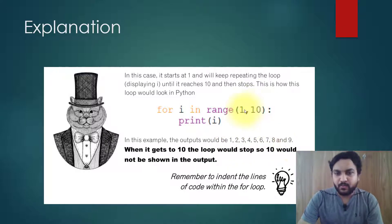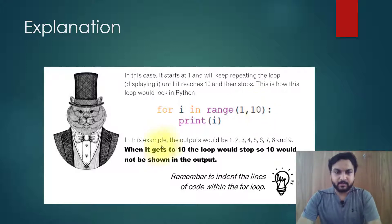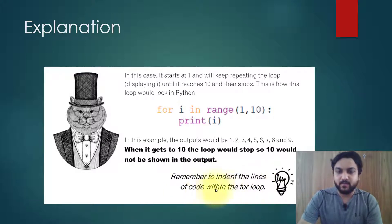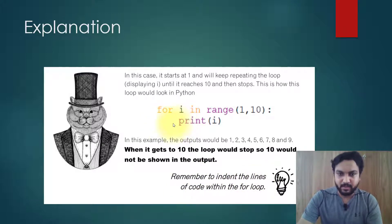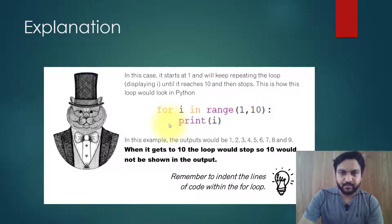It will count from 1 and it will end at 10. So remember to indent the line of code within the for loop — you keep a space here. Then only it will work.